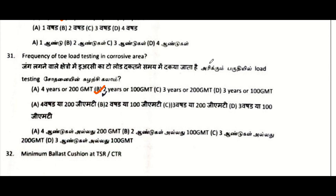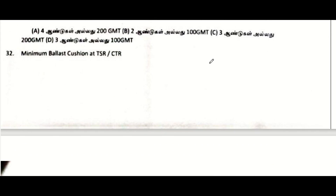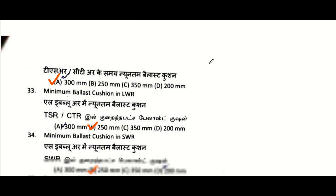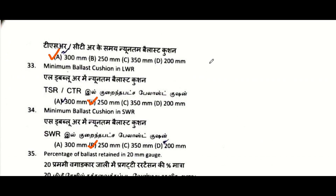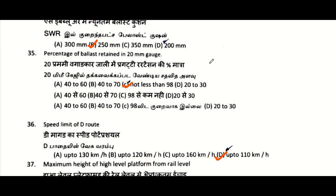Frequency of ERC lubrication in non-corrosion prone area: two years. Frequency of toe load testing in corrosive area: two years or 100 GMT. Minimum ballast cushion at TSR or CTR: 300 mm. Minimum ballast cushion in LWR: 250 mm — as per IRPWM 2020.